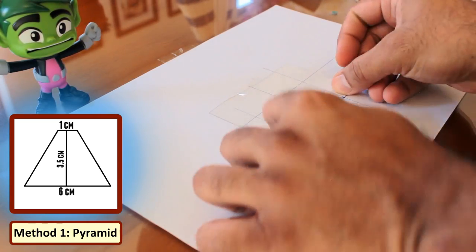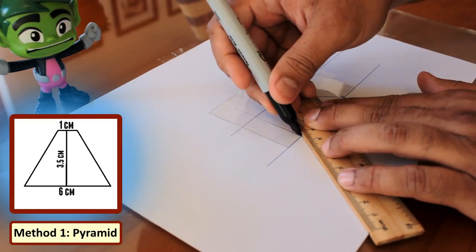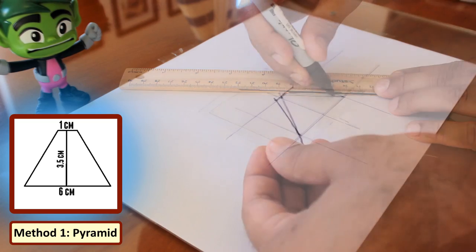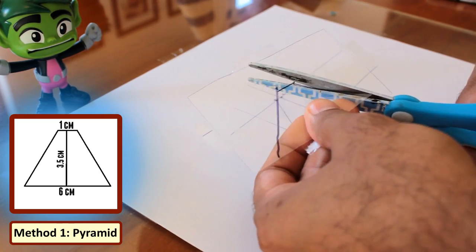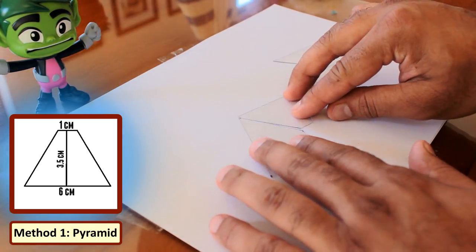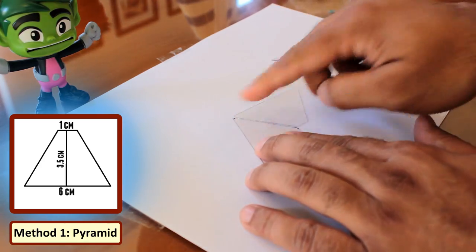Once you have the template ready, place the plastic sheet or the CD cover on it and very carefully cut the 4 sides out of it. Now using a clear tape, join the sides. Make sure to leave bit of gap between the sides as that will help you in folding the sides.